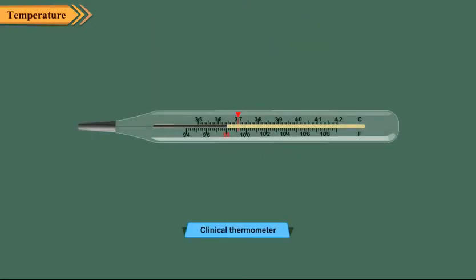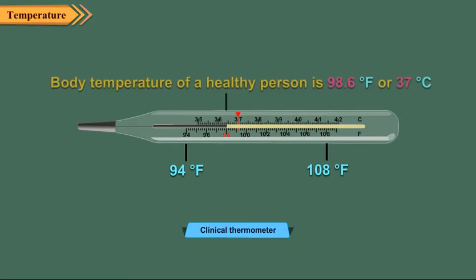The temperature of a human body is measured with a clinical thermometer. Generally, markings from 94 degree Fahrenheit to 108 degree Fahrenheit are done in clinical thermometers. The body temperature of a healthy person is 98.6 degrees Fahrenheit or 37 degrees Celsius.